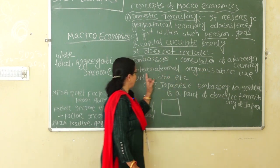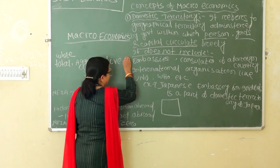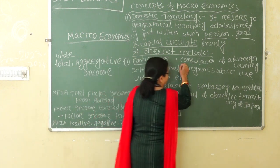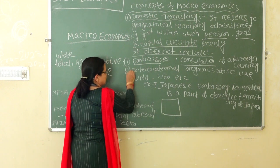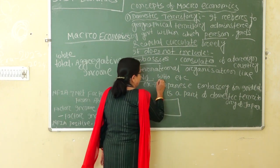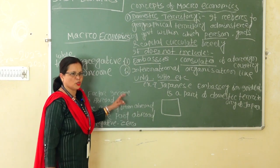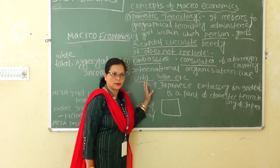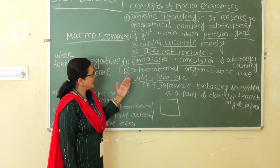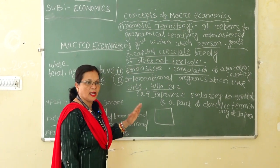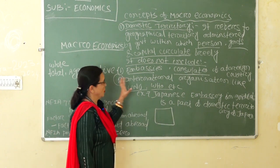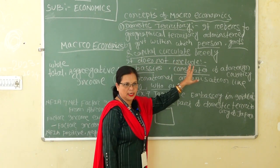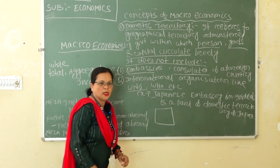Domestic territory does not include embassies and consulates of a foreign country. Second, it does not include international organizations like the UN and the WHO — WHO means World Health Organization and UN means United Nations. So domestic territory refers to the geographical territory administered by the government within which persons, capital, and goods are circulated freely.